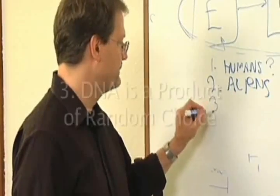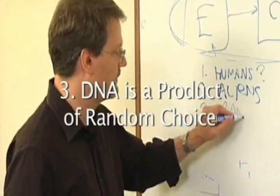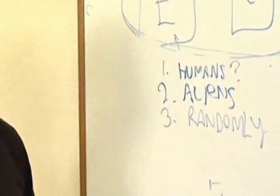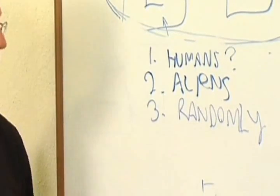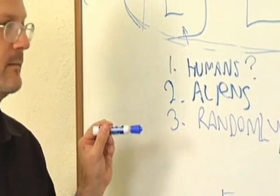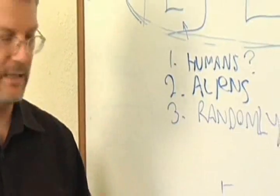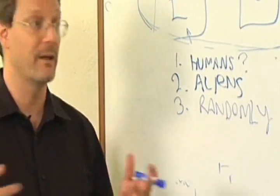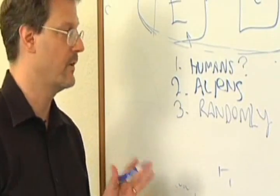Number three: it occurred randomly. It was an accident, it just happened. That's the primordial soup, right? Given enough time and enough stars and enough planets and a big enough universe, sooner or later, this had to have happened.